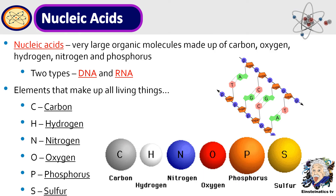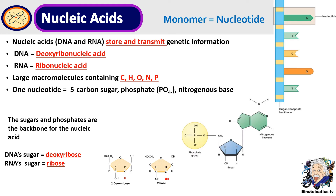Nucleic acids are elements that make up all living organisms: carbon, hydrogen, nitrogen, oxygen, phosphorus, and sulfur. The building blocks of nucleic acids are called nucleotides. They include DNA and RNA, and the main function of nucleic acids is to store and transmit genetic information. DNA is called the blueprint of life — DNA stands for deoxyribonucleic acid, and RNA stands for ribonucleic acid. These are large macromolecules containing carbon, hydrogen, oxygen, nitrogen, and phosphorus.